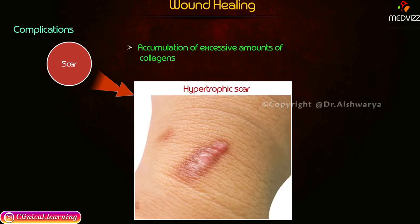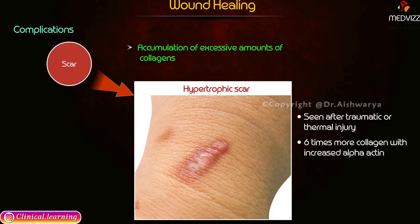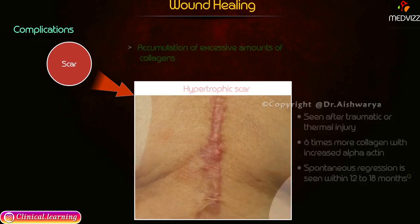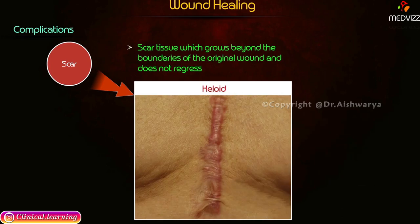Accumulation of excessive amounts of collagen may give rise to a scar known as a hypertrophic scar, generally seen after traumatic or thermal injury. Here, six times more collagen with increased alpha-actin is seen, and spontaneous regression occurs within 12 to 18 months.